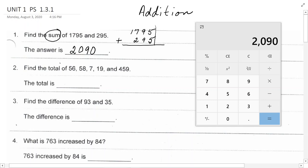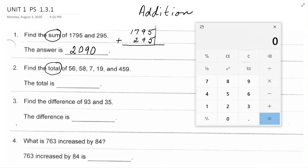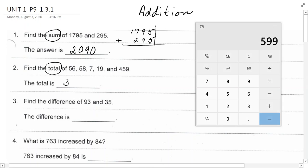All right, my next problem, instead of saying sum, it says find the total. That is another way to indicate that you are supposed to add. In my calculator, I'm going to press the C for clear. I'm going to type in 56 plus 58 plus 7 plus 19 plus 459 equal sign. And I get that the total is 599.